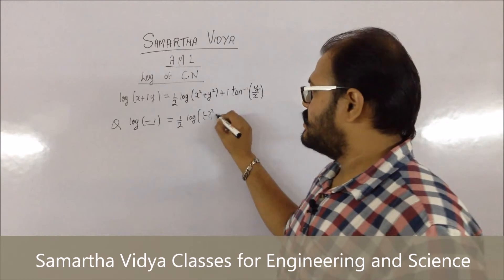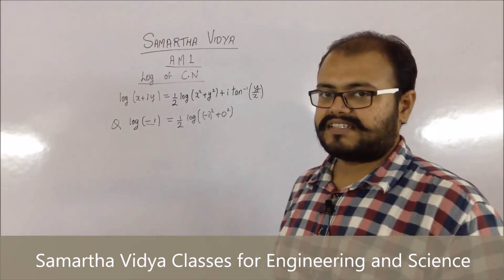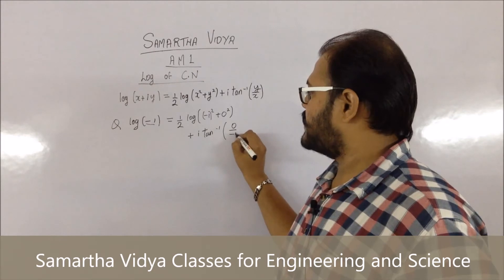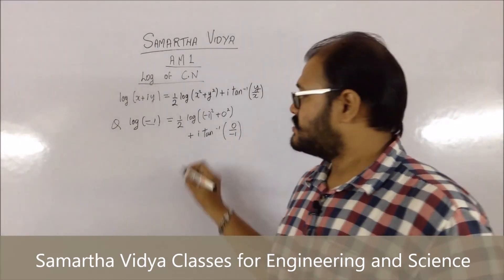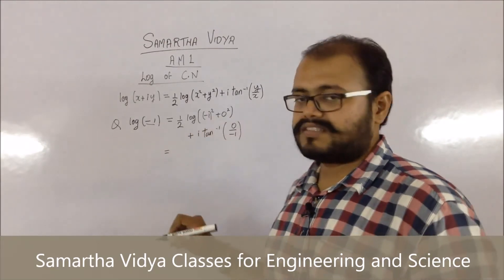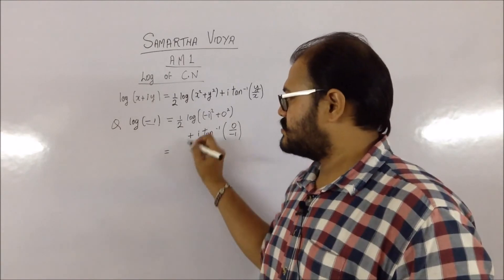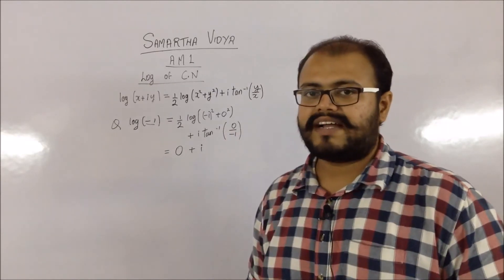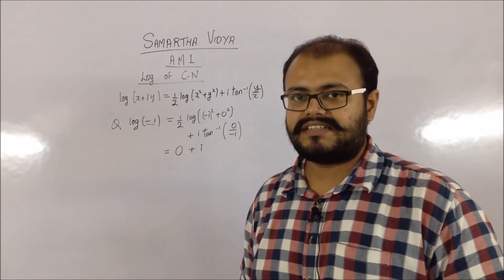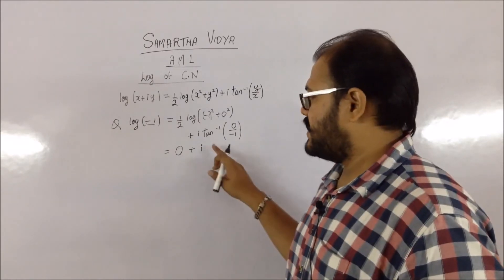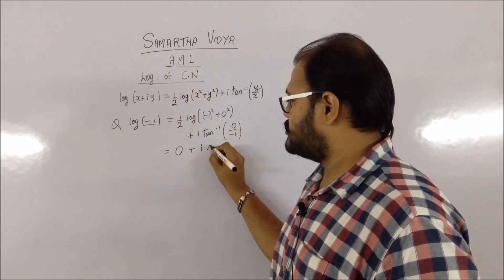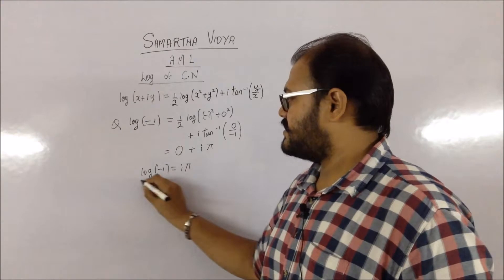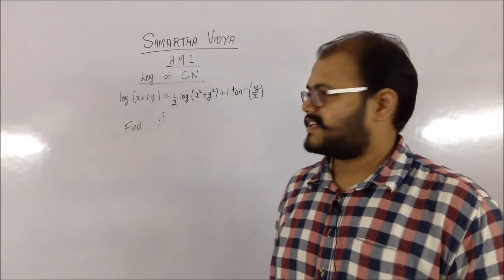This becomes (1/2)·log(1) + i·tan⁻¹(0/−1). Since (−1)² = 1 and log(1) = 0, the first part is zero. For the second part, tan⁻¹(0/−1) — recalling from the earlier video on roots of complex numbers — this value is π. So log(−1) = iπ.